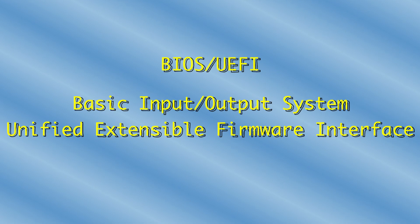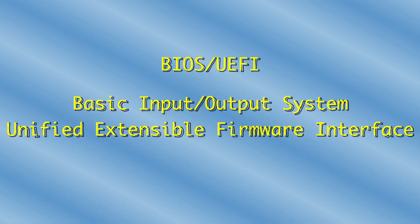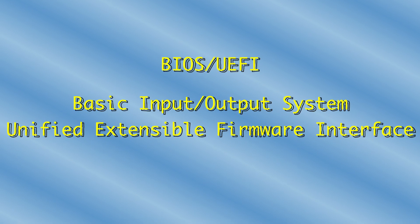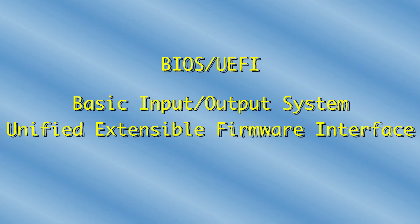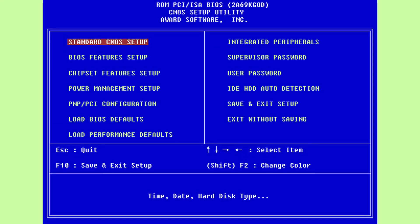Next up is actually a two-in-one: BIOS and UEFI. BIOS stands for Basic Input Output System and UEFI stands for Unified Extensible Firmware Interface. The BIOS is the firmware that starts before your operating system loads up. It lets you change different settings on your device like the boot order of hard drives, virtualization settings, RAM settings, or troubleshoot hardware issues.